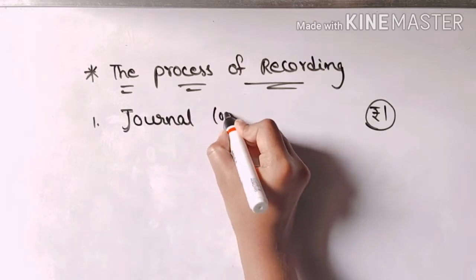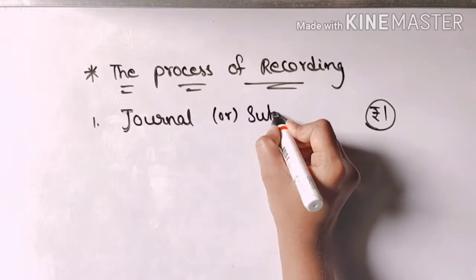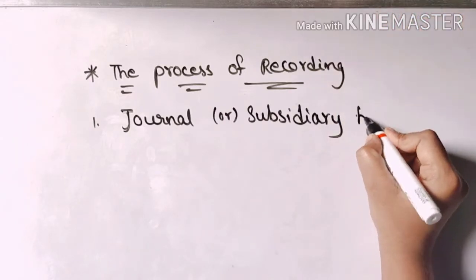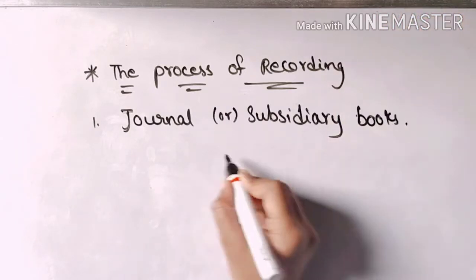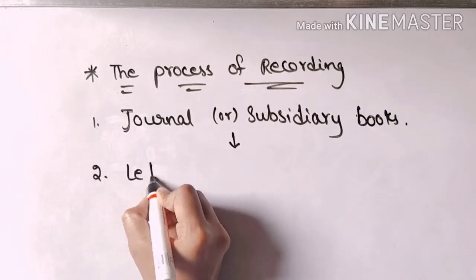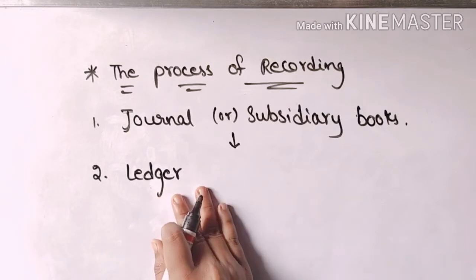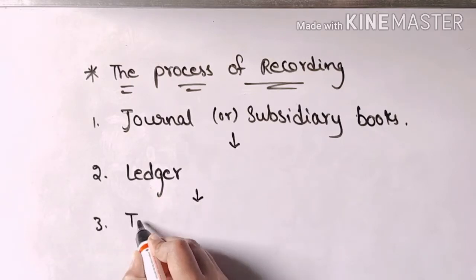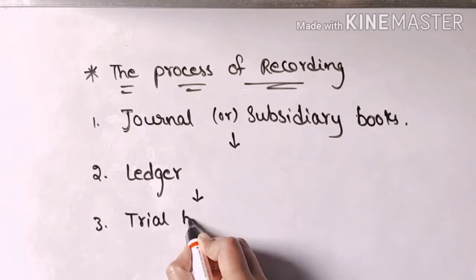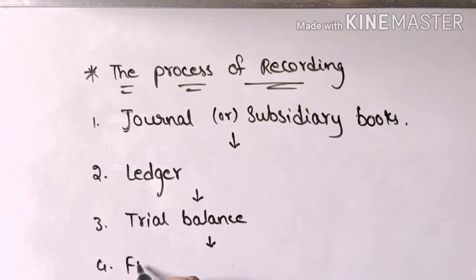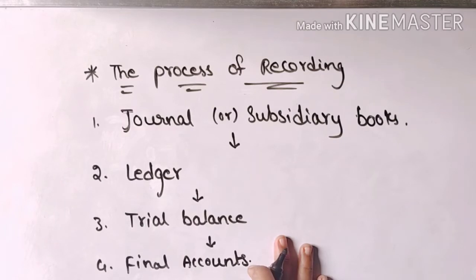Some transactions may be recorded in the journal and other transactions in the subsidiary books. From the journal, entries are transferred to the book called the ledger where posting is done. After ledger posting, the balances are carried forward to the trial balance, and from the trial balance the final accounts are prepared. This is the process we have been learning from earlier classes.